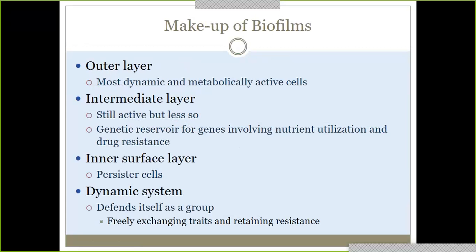The makeup of biofilms has different layers. The outer layer is the metabolically active cells. The intermediate layer is not as active, but it holds a reservoir of genes for nutrient utilization and drug resistance. The innermost layer contains those persister cells, lying dormant but always persisting and resistant. The whole community defends itself as a group and freely exchanges genetic traits to help mutate and resist everything it can.